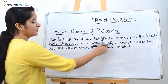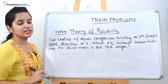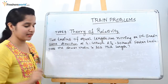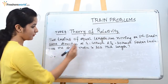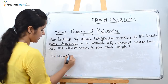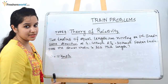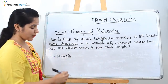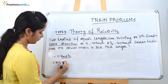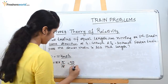The speed of the two trains is 40 kilometers per hour and 30 kilometers per hour and they are moving in the same direction. We know if it's the same direction, we have to subtract: 40 minus 30 equals 10 kilometers per hour. It is in kilometers per hour but the time is given in seconds, so we convert it to meters per second: 10 into 5 by 18, which is 50 by 18 meters per second.